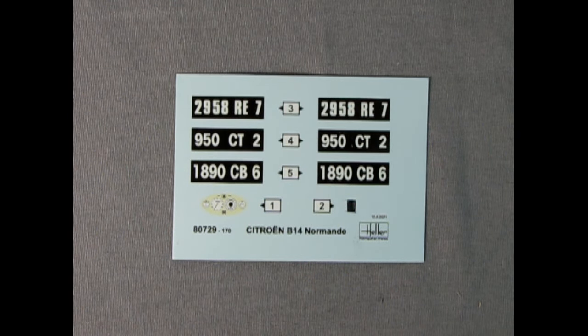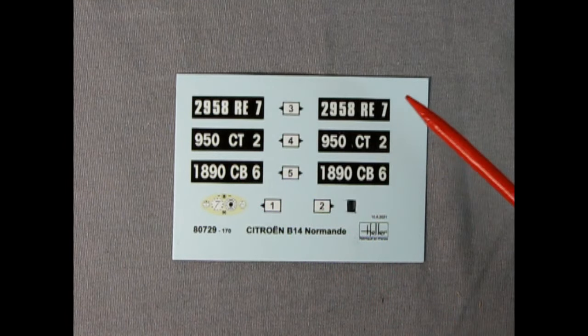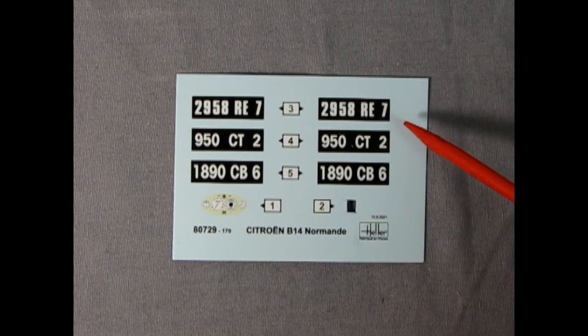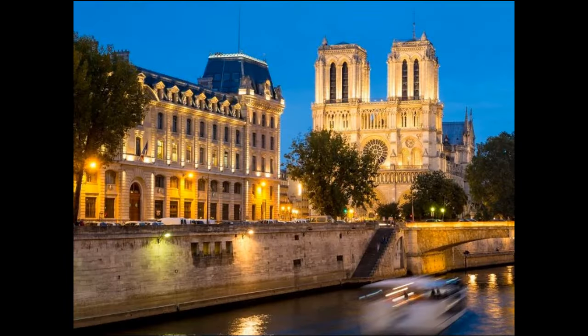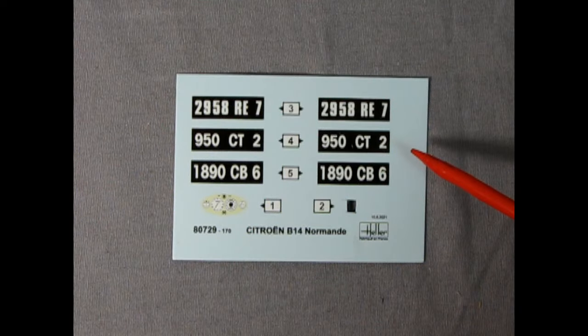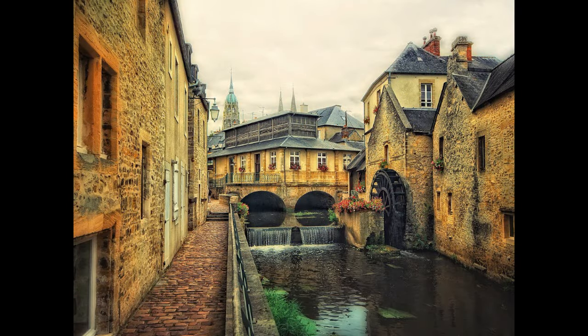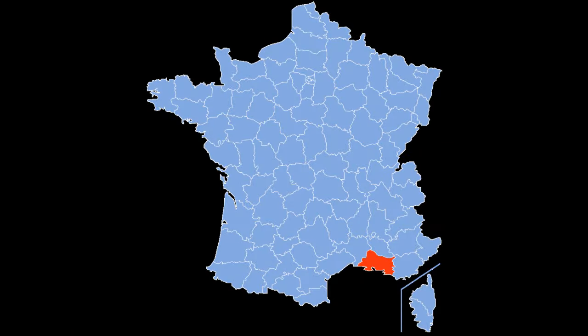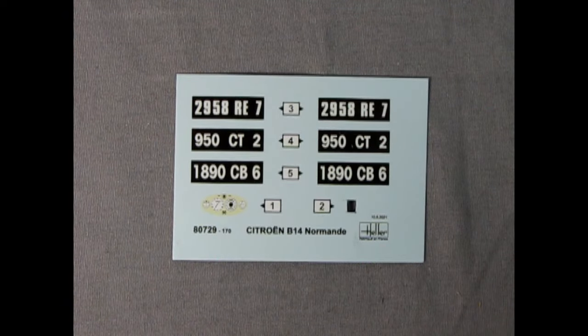The license plates included in this kit follow the new for 1928 French registration system. This system used one to four letters in the front followed by a two-letter code and could include a further number at the end after the two-letter code. Deciphering the code our first plate is from Caen, the second plate from Calvados and the third from Bouches-du-Rhône. Which plate would you use?